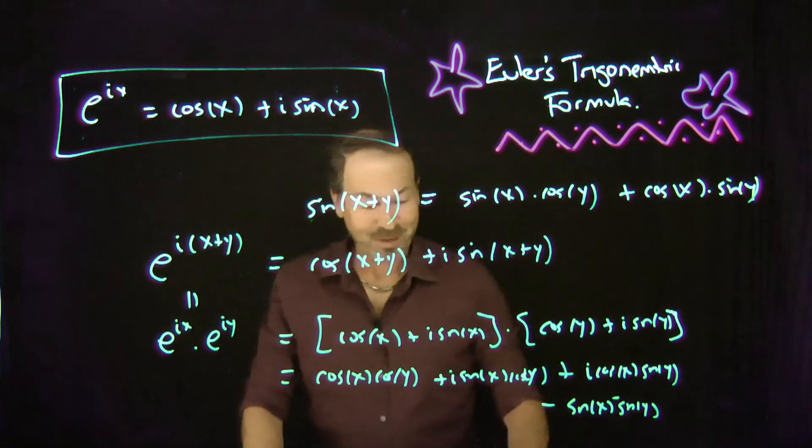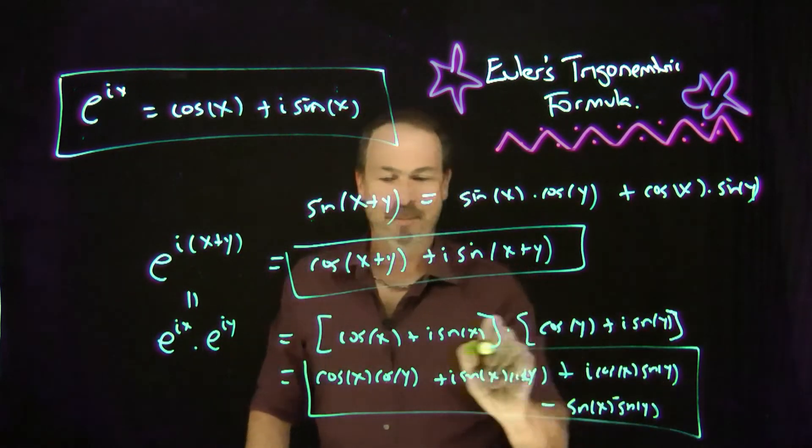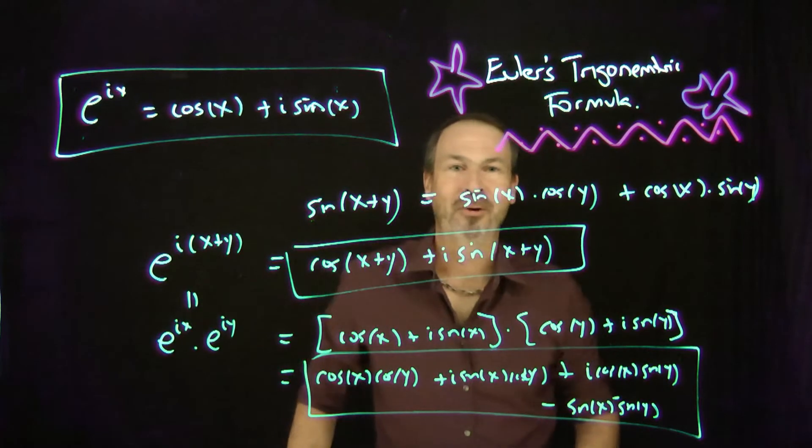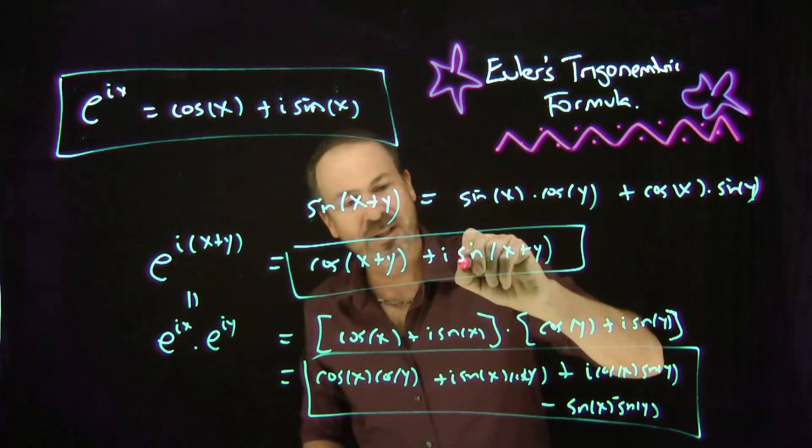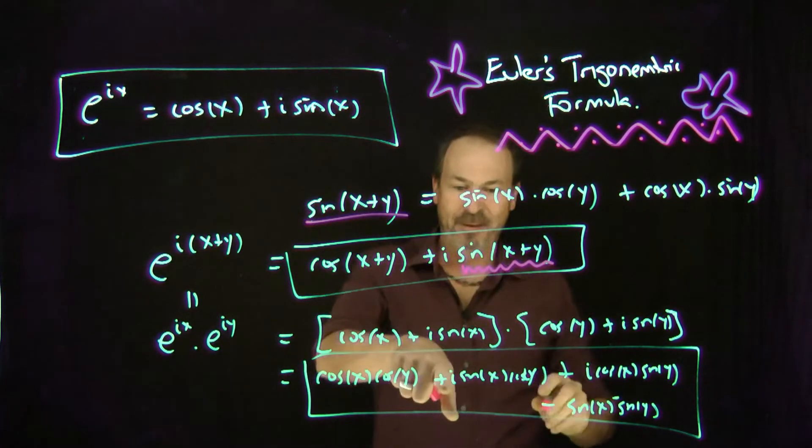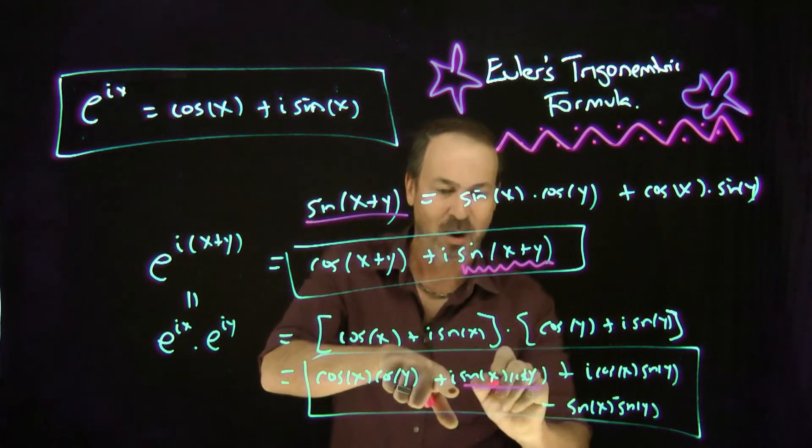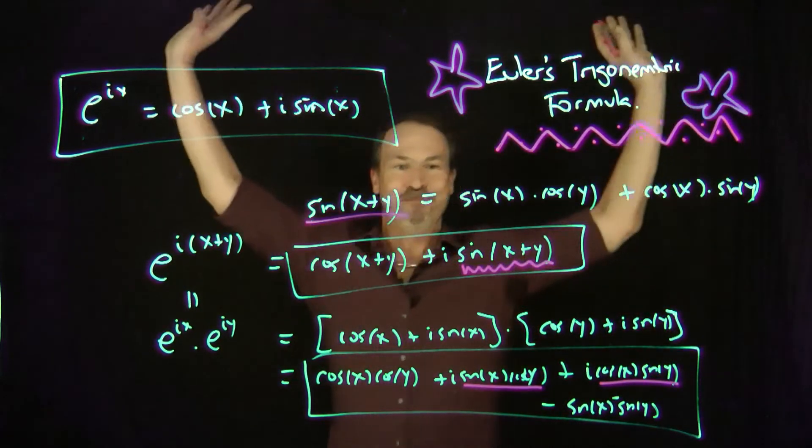But look. I've got this formula and I've got this formula. And they're both the same thing by the basic exponent laws. So let me look at the i part. The i part of this formula is just sine of x plus y. That's what I wanted. And it must equal the i part of this formula, which is sine x cos y plus cos x sine y. Beautiful. There it is.